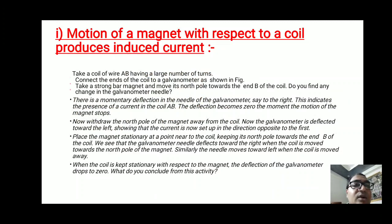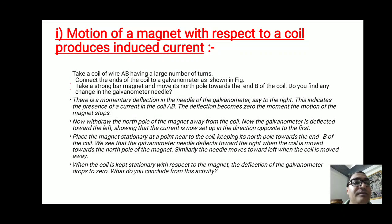Now withdraw the north pole of the magnet away from the coil. The galvanometer needle is deflected towards the left, showing that the current is now set up in the direction opposite to the first one. When inserting the magnet, the needle deflects to the right; when taking out the north pole, the same magnet causes the needle to deflect towards the left direction.